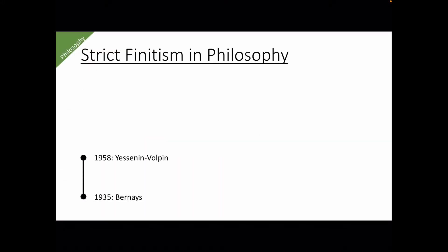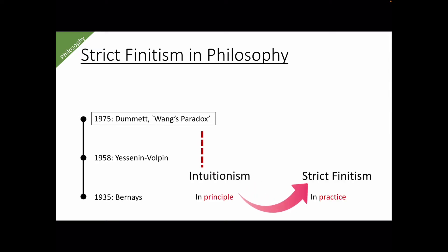As we saw, Bernays and Yessenin-Volpin were two mathematicians who entertained strict finitistic ideas. Now, let me introduce two philosophers who discussed strict finitism. The first is Dummett. He wrote a paper to attack strict finitism, saying that it is semantically inconsistent in favour of intuitionism. The second is Wright. He wrote a meticulous paper to defend strict finitism from Dummett's attack, and rather to return an attack upon intuitionism. We have no room to look into this debate, but thanks to this debate, we have a clear understanding of what strict finitism is like.